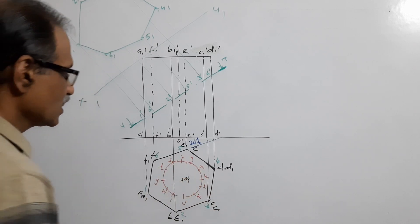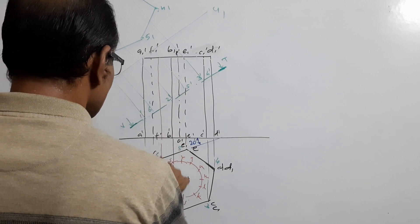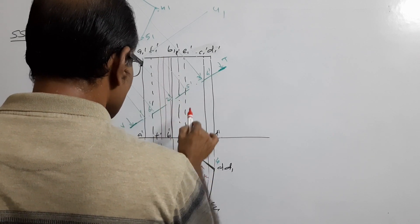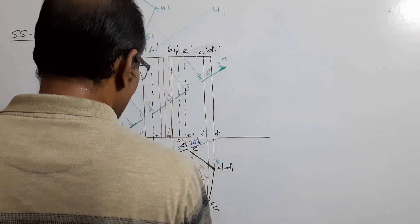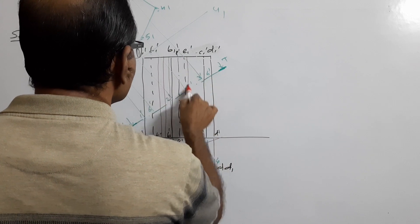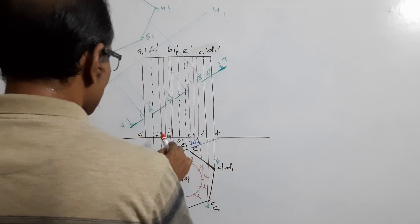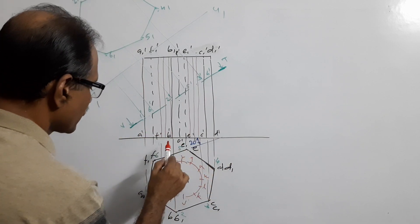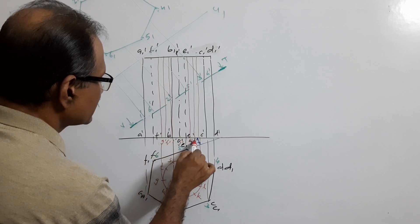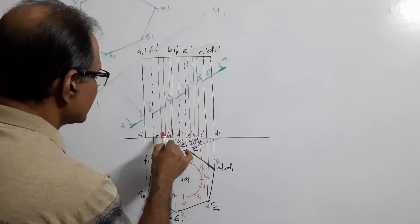Project them to the elevation using very light lines. Points A, J, and R coincide along with the axis. Name them G dash, H dash, I dash, J dash, K dash, L dash, M dash, N dash, Q dash, R dash, S dash, T dash.